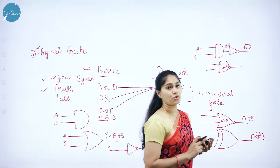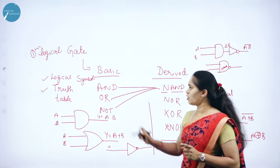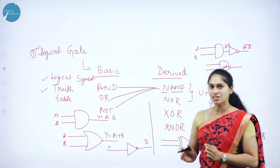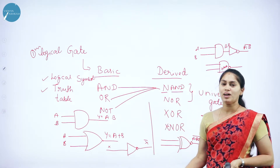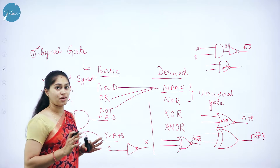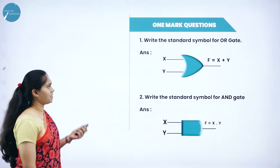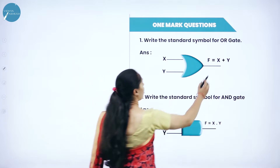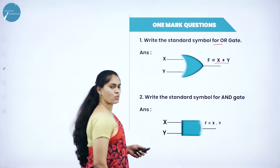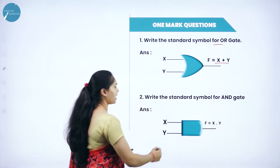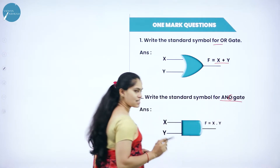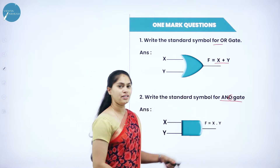For two and three mark questions, these kinds of questions can be asked. Write the standard symbol for OR gate — it takes two inputs and produces X plus Y as output. Write the standard symbol for AND gate — remember the letter D shape, output is X dot Y. The standard symbol is worth one mark and the truth table is worth additional marks.